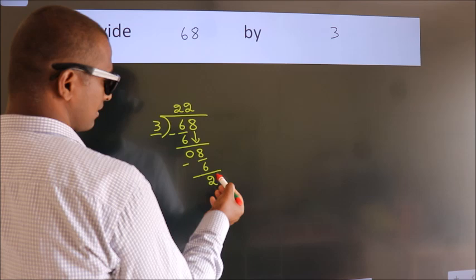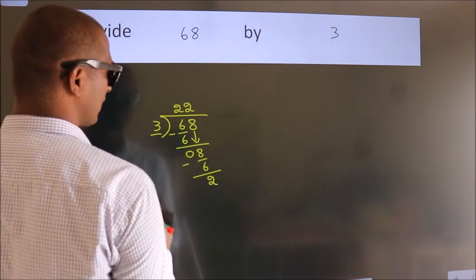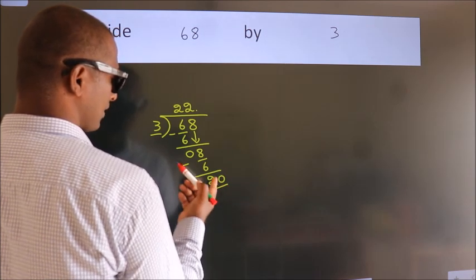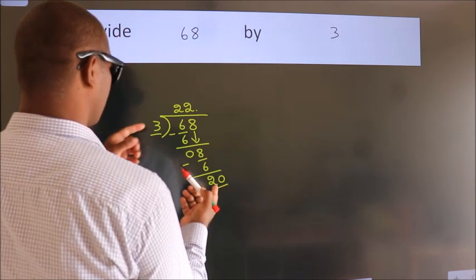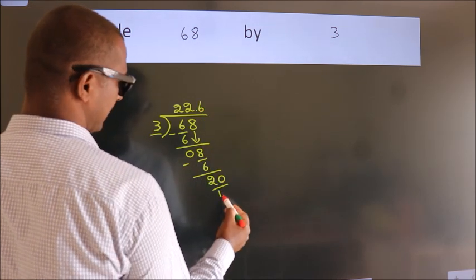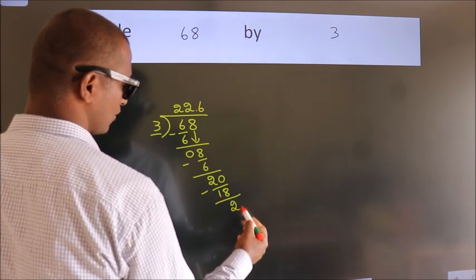After this, no more numbers to bring it down. So, what we do is, we put dot, take 0. So, 20. A number close to 20 in 3 table is 3 times 6 equals 18. Now, we subtract. We get 2.